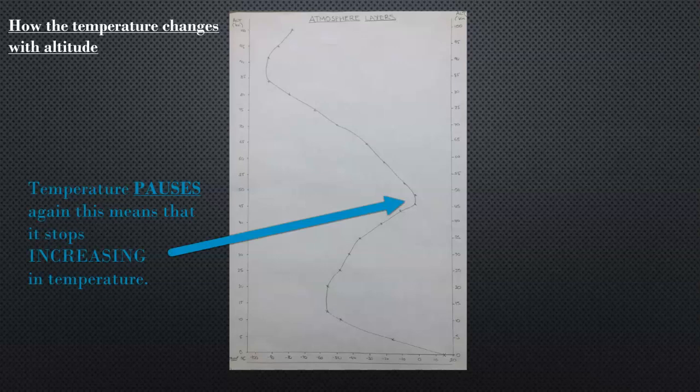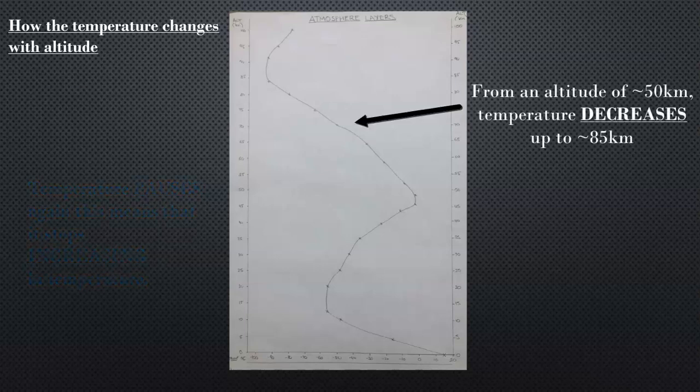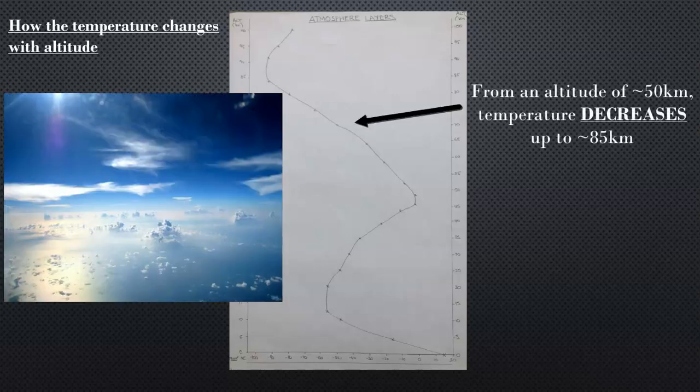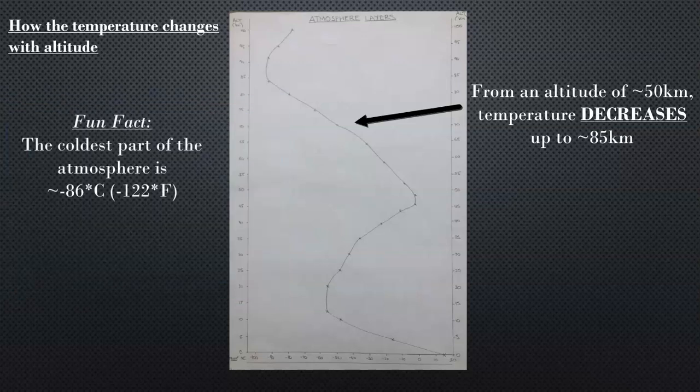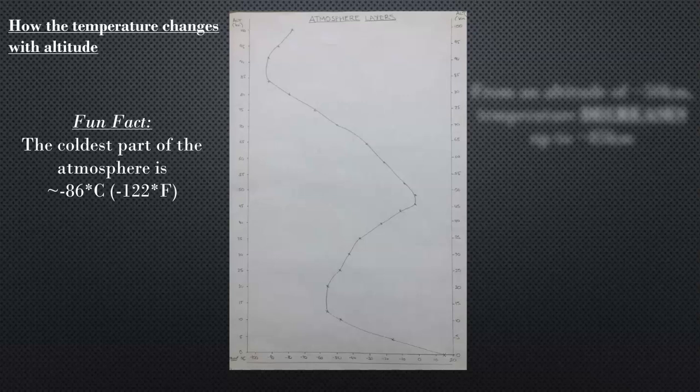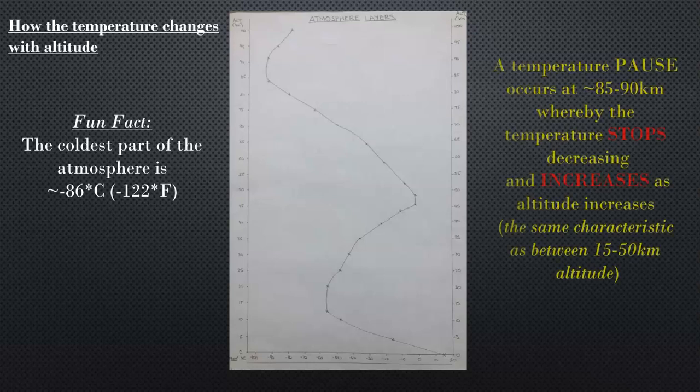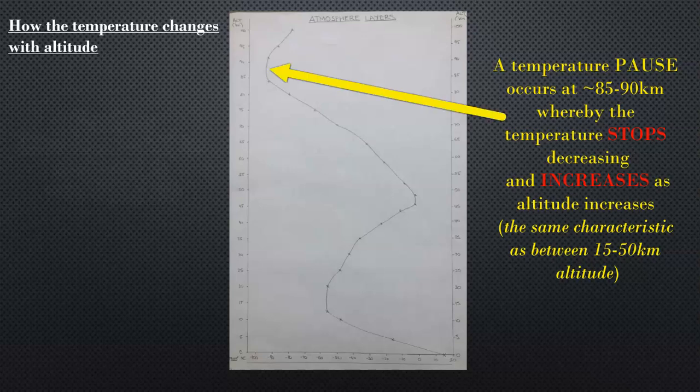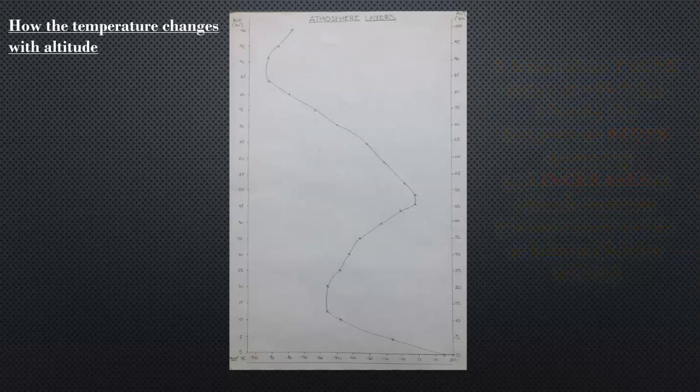It stops increasing, has a small leveling off as altitude continues, then starts to decrease again up to 85 kilometers, about 50 miles. Here we get the coldest part—it goes down to around negative 85 degrees Celsius at around 85 kilometers in the air. There is another pause where the temperature doesn't decrease further, and it starts to increase around 90 kilometers and increases beyond 100 kilometers, which the graph doesn't show.